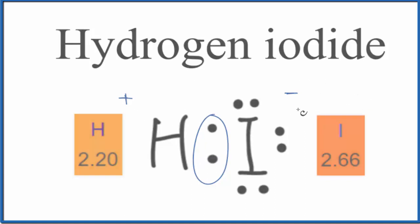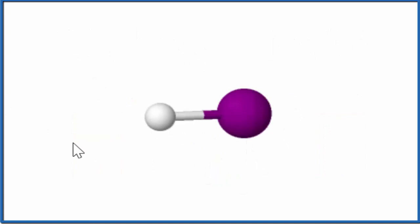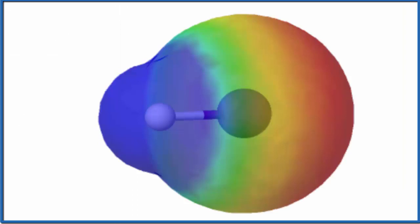Let's take a look at this in three dimensions. So the white's the hydrogen, and the purple is the iodine. If we look at the surface of the molecule, the blue, that's going to be more positive, and the red is more negative.